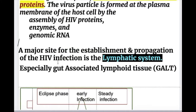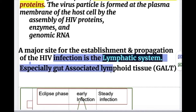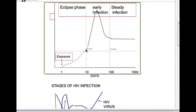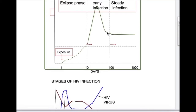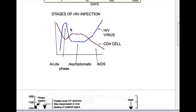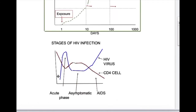A major site for establishment and propagation of HIV infection is the lymphatic system, especially the gut-associated lymphoid tissue (GALT). The acute phase after viral entry is a flu-like syndrome lasting two weeks to two to three months, followed by a latent period of about two to ten years, after which opportunistic infections increase leading to death.